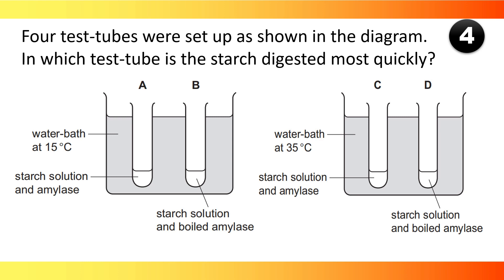Four test tubes were set up as shown in the diagram. In which test tube is starch digested most quickly? The answer is C.